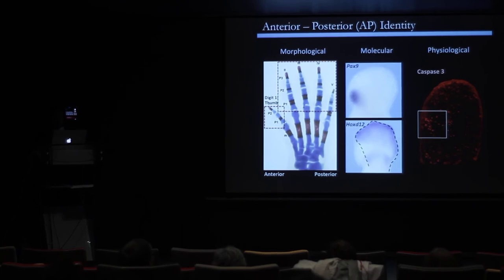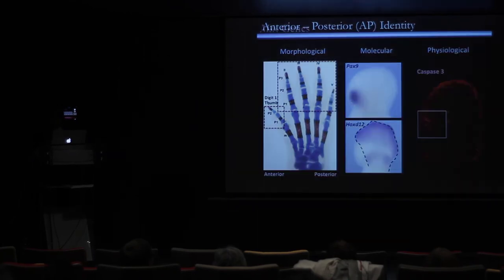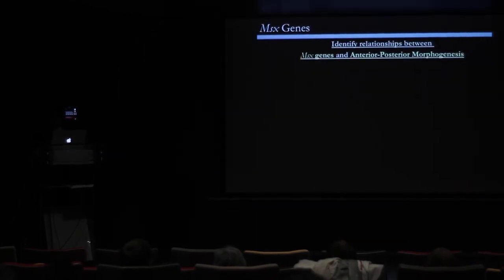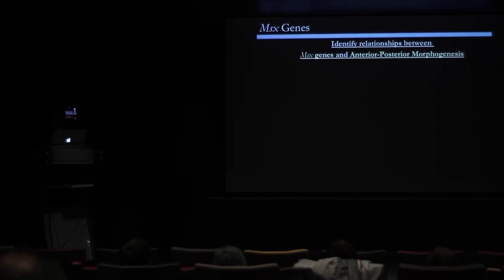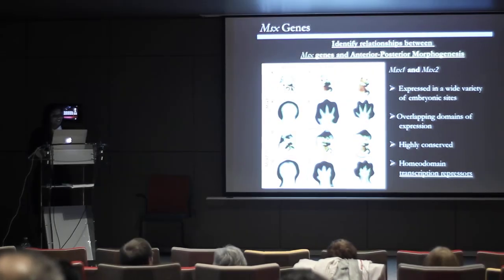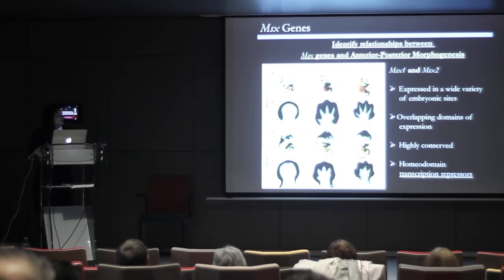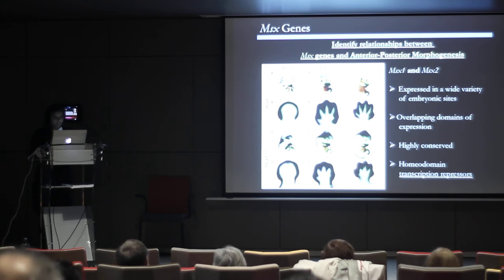Having said this, we then form the basis of the morphogenetic process we would like to study — specifically the anterior-posterior morphogenetic processes. But what are the genes we are interested in? We are interested in identifying the relationship between MSX genes and anterior-posterior morphogenesis. In the mouse, you have MSX1 and MSX2, which are expressed globally, and these will be of our interest.